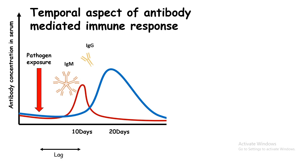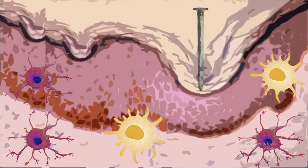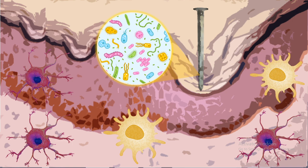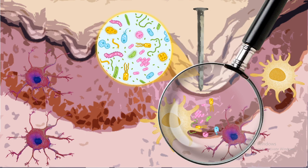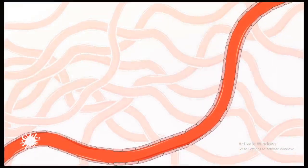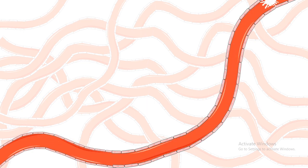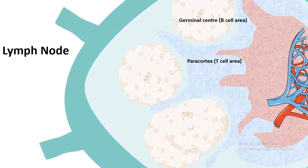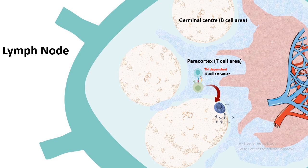The reason for this lag is a multi-step process. Imagine a rusty nail pricks your skin and bacteria or viruses gain access inside your body. Antigen-presenting cells like macrophages and dendritic cells beneath the skin recognize the pathogen, process it, and display pathogenic determinants on MHC molecules. These dendritic cells then migrate through blood vessels to the lymph node — the immune system's base camp — where they activate T cells, which in turn activate B cells. Some activated B cells are instantly converted to plasma cells that begin secreting antibodies.